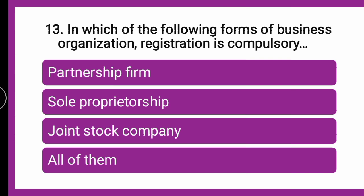Next question: In which of the following forms of business organization is registration compulsory — whether partnership firm, sole proprietorship, joint stock company, or all of them? The correct answer is joint stock company. Registration is mandatory for joint stock company because multiple investors are investing large amounts, raising huge capital, along with large-scale production and sales.